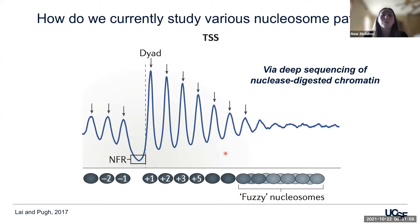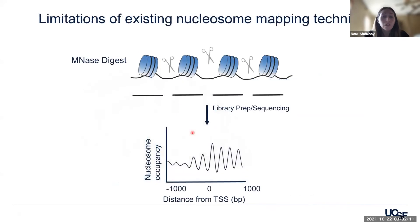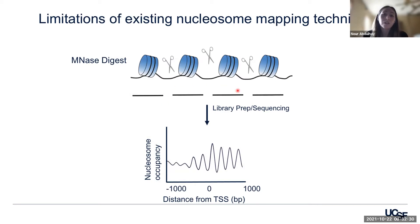Nucleosomes are therefore positioned non-randomly across genome regions to allow proper spatial temporal access to gene regulatory elements, such as transcription factors. While deep sequencing of nuclease-digested chromatin has given us a great sense of genome-wide nucleosome patterns, there are several existing drawbacks. The main one is that the chromatin is often digested down to mononucleosome sizes prior to sequencing, so you don't get a sense of longer-range chromatin fiber patterns. These techniques also rely on short-read sequencing, which can only map 600 to 700 base pairs of DNA, and both limitations prevent mapping to repetitive or other hard-to-sequence regions.